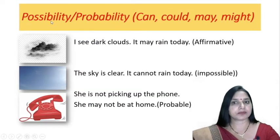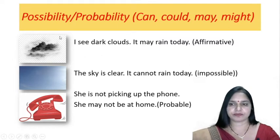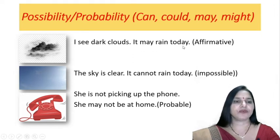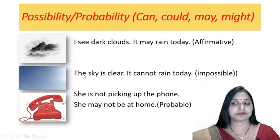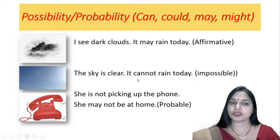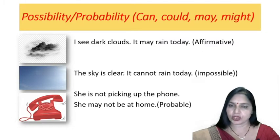Now, to express possibility or probability, we use can, could, may or might. 'I see dark clouds' — then 'it may rain today.' This affirmative sentence expresses the possibility of rain today. 'The sky is clear' — that means there is no possibility of rain, so we say 'It cannot rain today. It is impossible.' To express impossibility, we use 'cannot,' not 'may not.' May is used in affirmative to express possibility, but in the negative we use 'cannot.'